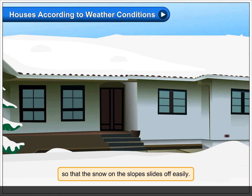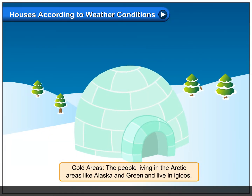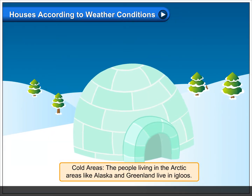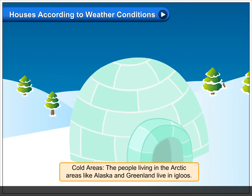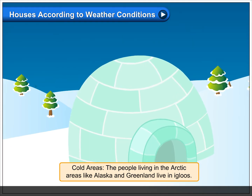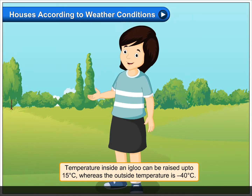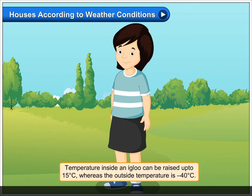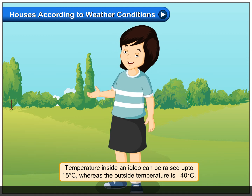In cold areas, the people living in the Arctic areas like Alaska and Greenland live in igloos. The temperature inside an igloo can be raised up to 15 degrees Celsius, whereas the outside temperature is minus 40 degrees Celsius.